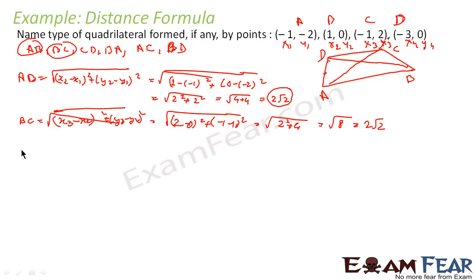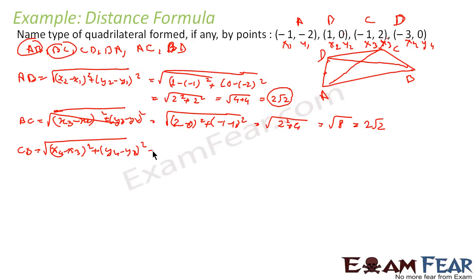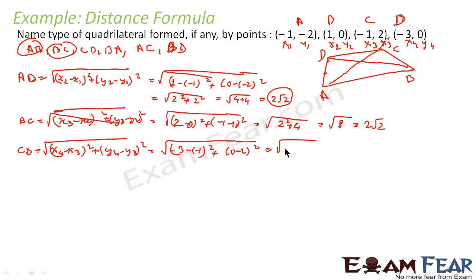Now let us find CD. The distance CD is root of (x4 minus x3) squared plus (y4 minus y3) squared. x4 is minus 3 and x3 is minus 1, y4 is 0 and y3 is 2. This comes out to be root of (minus 3 minus minus 1) squared plus (0 minus 2) squared, that is root of 2 squared plus 2 squared, which is root of 8, that is 2 root 2.